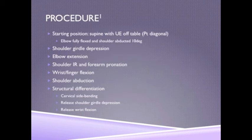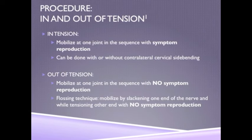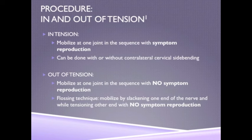The patient should be positioned in supine with the upper extremity off the table. The elbow should start fully flexed and shoulder abducted to ten degrees. Then you depress the shoulder, extend the elbow, internally rotate the shoulder, and pronate the forearm. Flex the wrist and fingers, then abduct the shoulder, and ask the patient to side bend their cervical spine. An in-tension mobilization is then applied at one joint within the sequence with symptom reproduction.